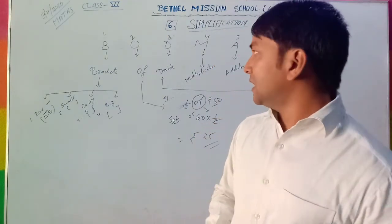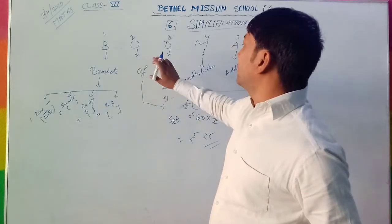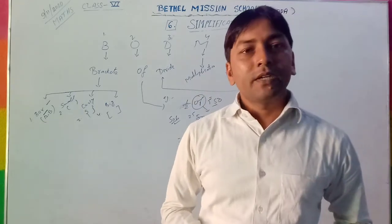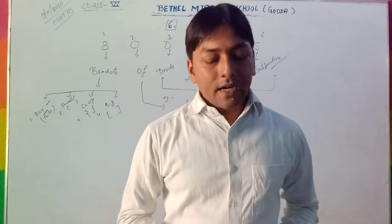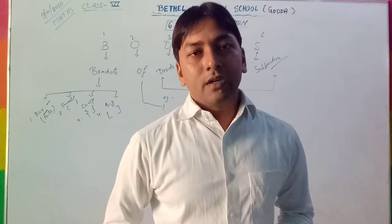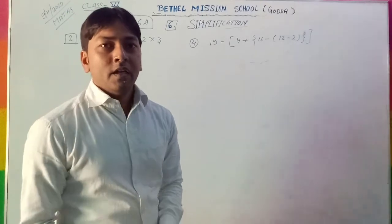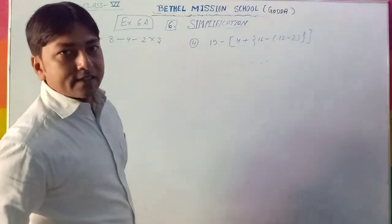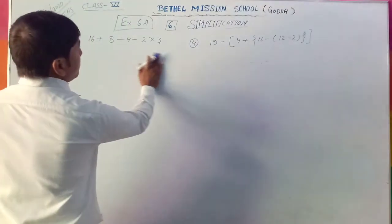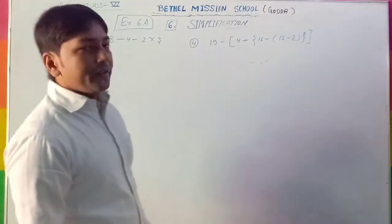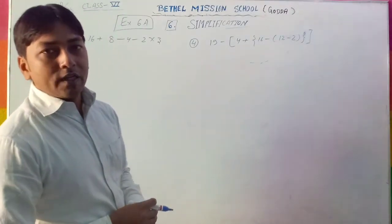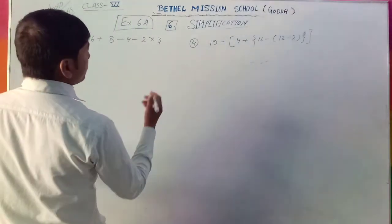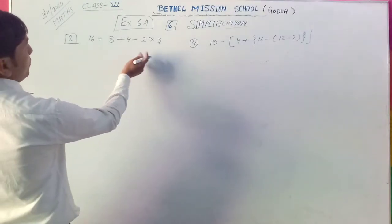I hope you got it. So the order is: first bracket, then off, then division, then multiplication, then addition, and at last subtraction. Now we do the exercise for more understanding. I have taken two examples from exercise 6A, and both are based on fifth class — the same type of questions you solved in fifth class. So first we recall.